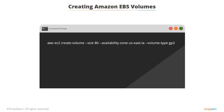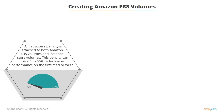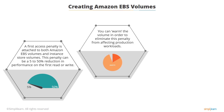You can also copy a volume to a different region using snapshots. One important point to note is that a first access penalty is attached to both Amazon EBS volumes and instance store volumes. This penalty can be a 5 to 50% reduction in performance on the first read or write. It is recommended that you warm the volume in order to eliminate this penalty from affecting production workloads, though this is not mandatory and in many cases may not be noticeable.